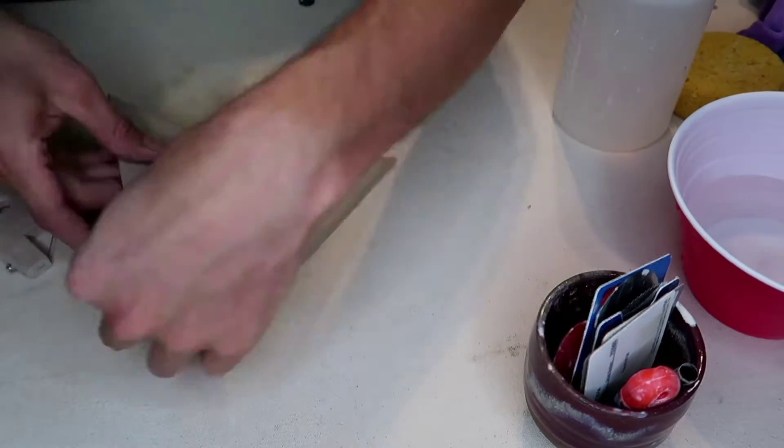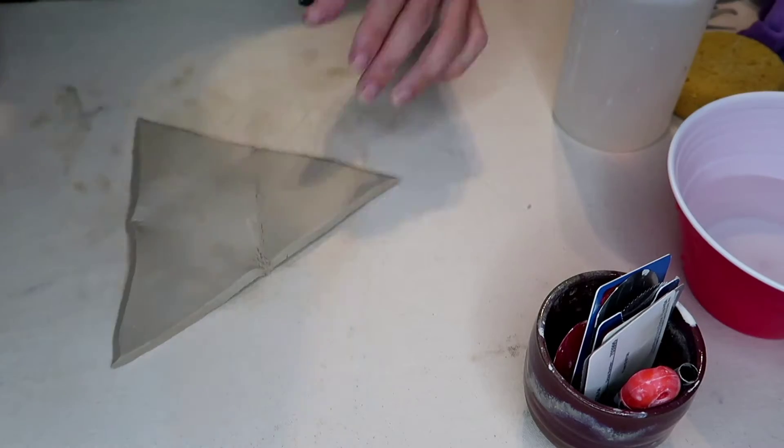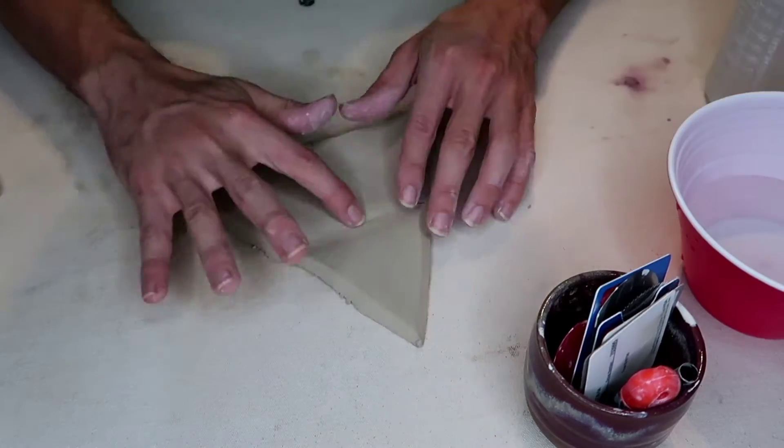I unfold it and start beveling the edges. This takes away a little bit of material so that the corners come together better and more evenly.